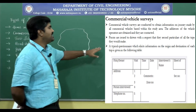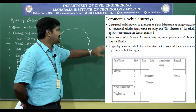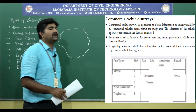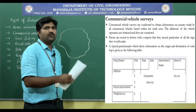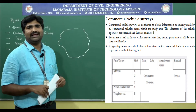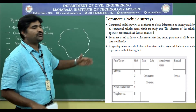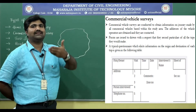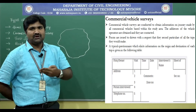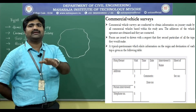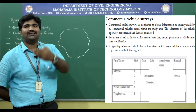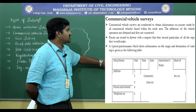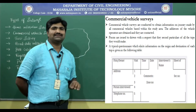We have to collect the addresses from the Regional Transport Office. We have to request them and explain the purpose of collecting these addresses. Then we are going to contact the vehicle operators or owners. We will issue a standard questionnaire format — forms are issued to drivers with a request that they record particulars of all the trips they make. Whatever trips they are making in their day-to-day life should be entered in that form.